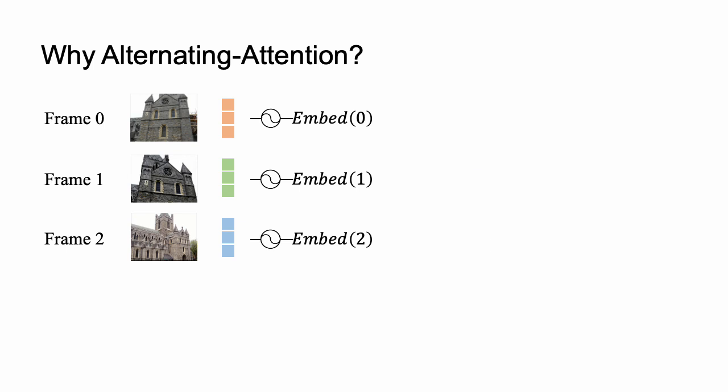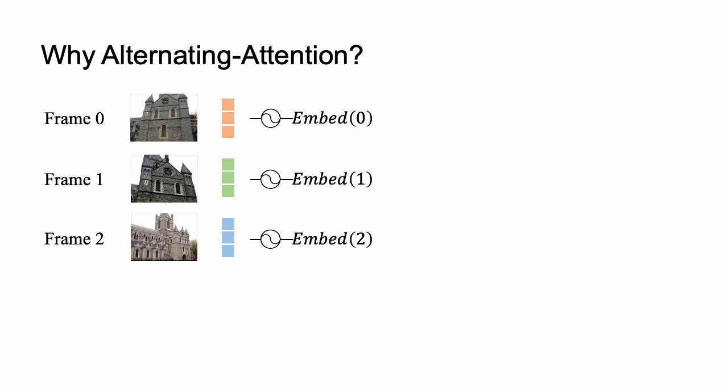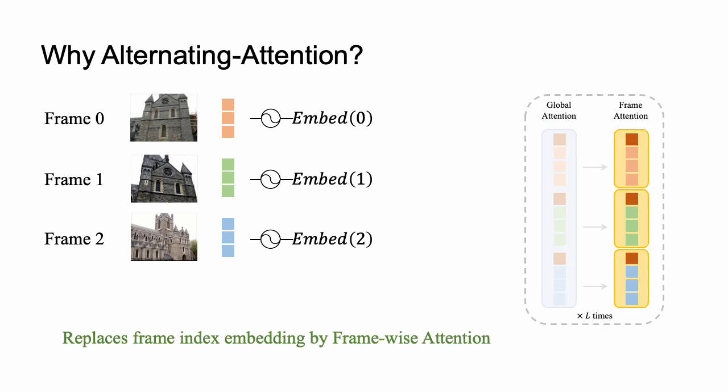During testing, we hope the model can handle a flexible number of input frames, meaning the model will see some frame-index embeddings not shown during training. Therefore, we use frame-wise attention, allowing the model to naturally learn per-frame feature clustering, so that the model knows which tokens come from which frame without relying on explicit frame index. This is our overall framework — just a neural network.